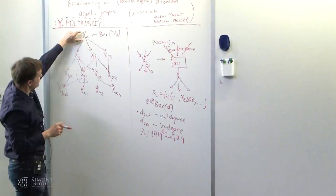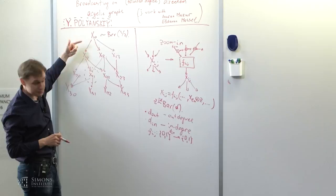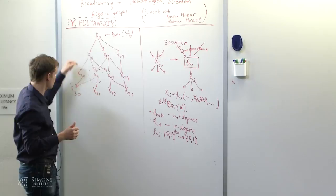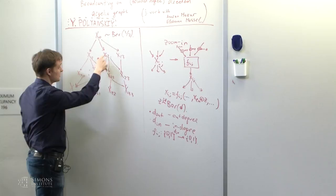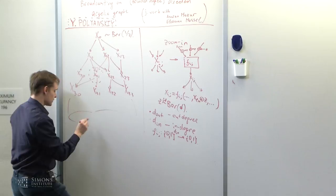Important notation: d_out is the out degree of a node, d_in is the in degree. fij is just a Boolean function from {0,1}^{d_in} to {0,1}.